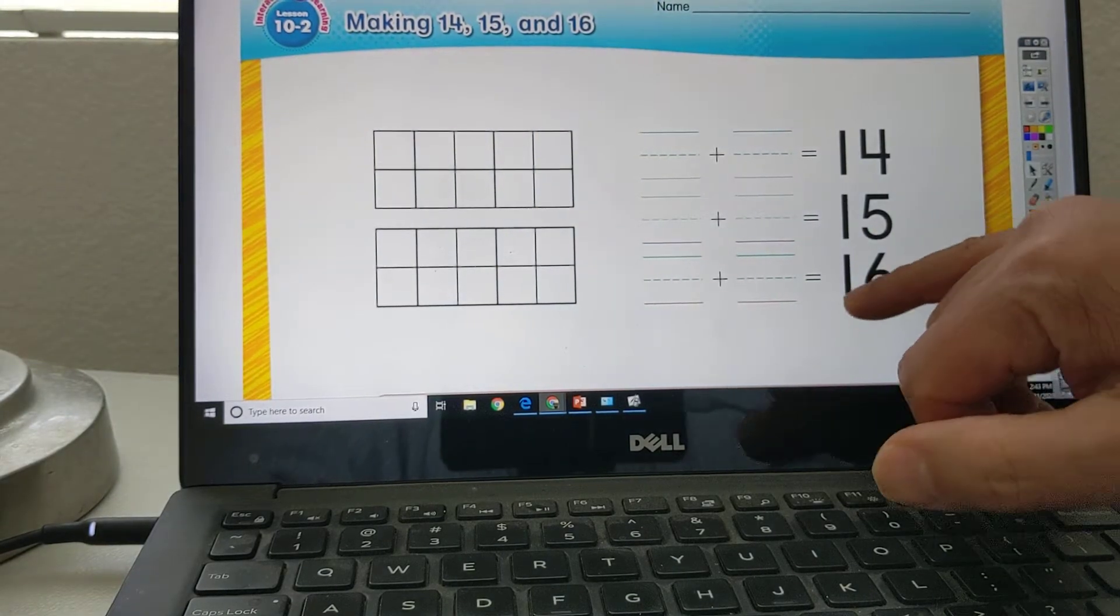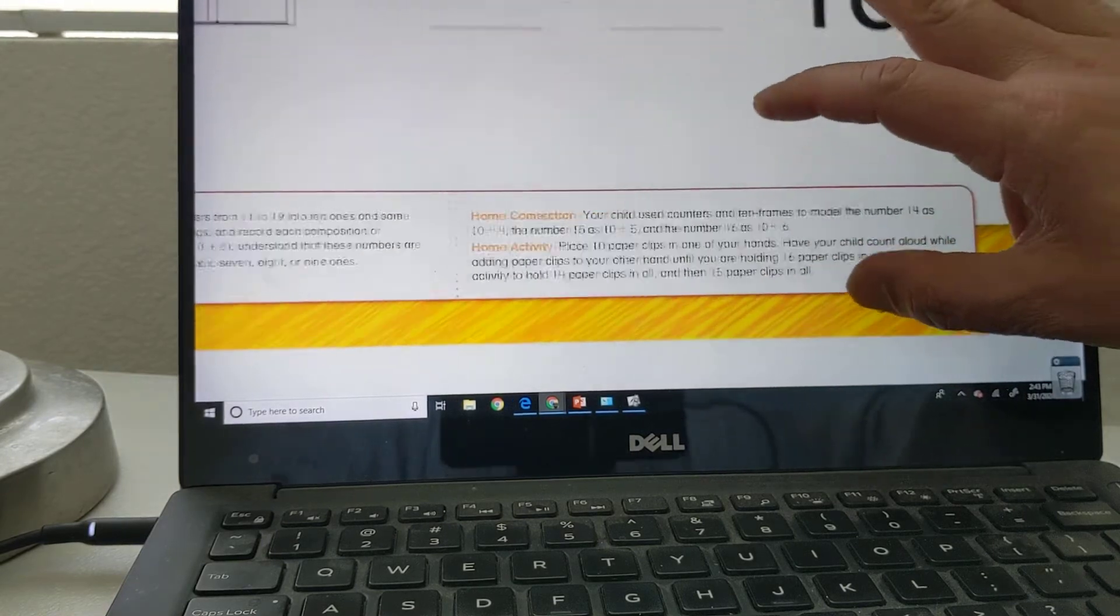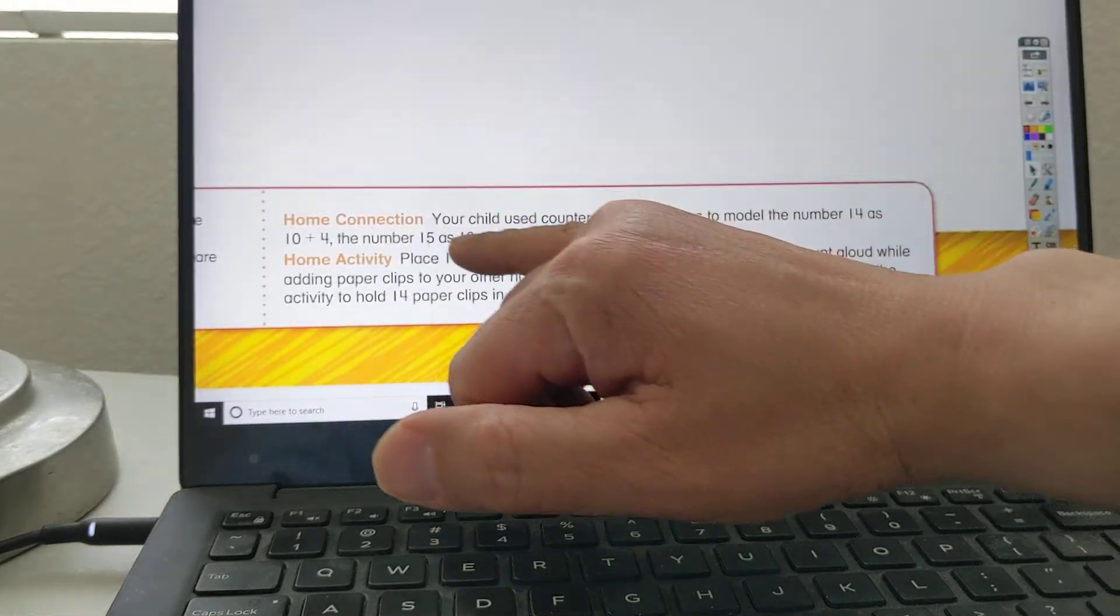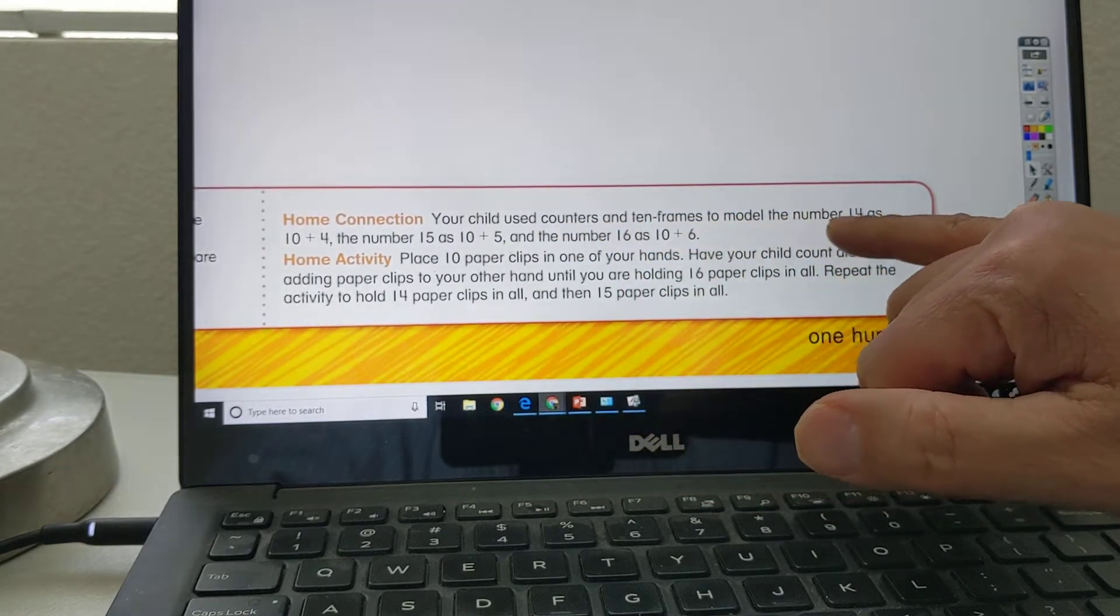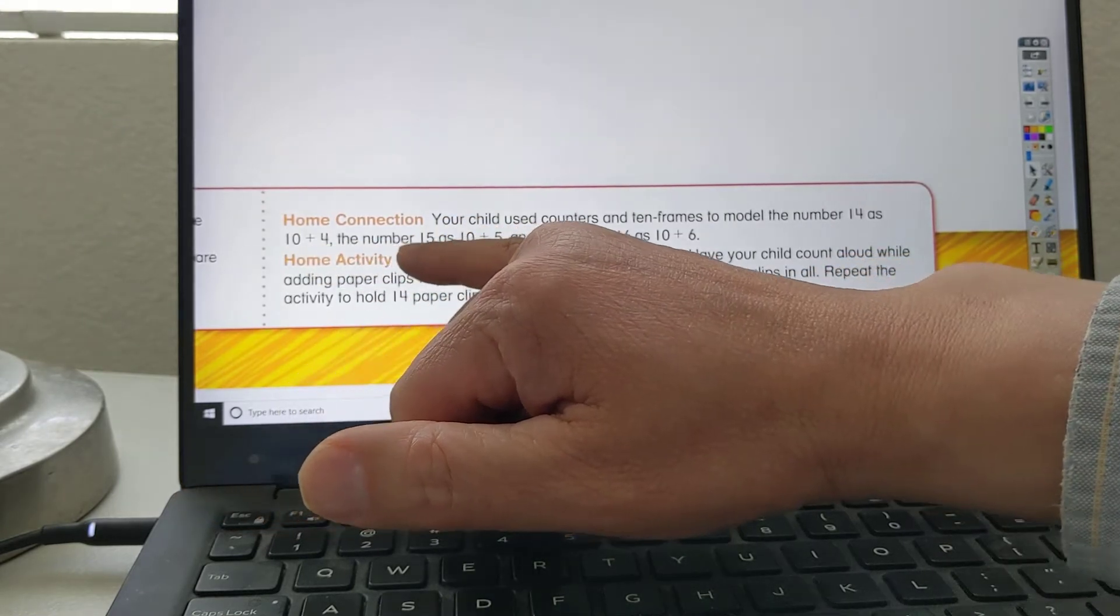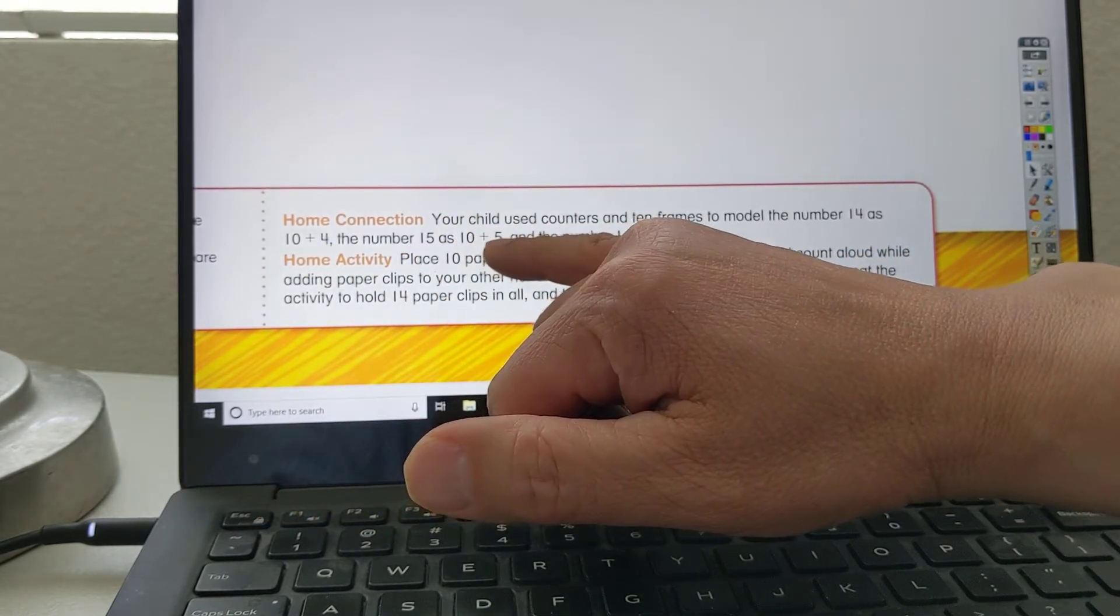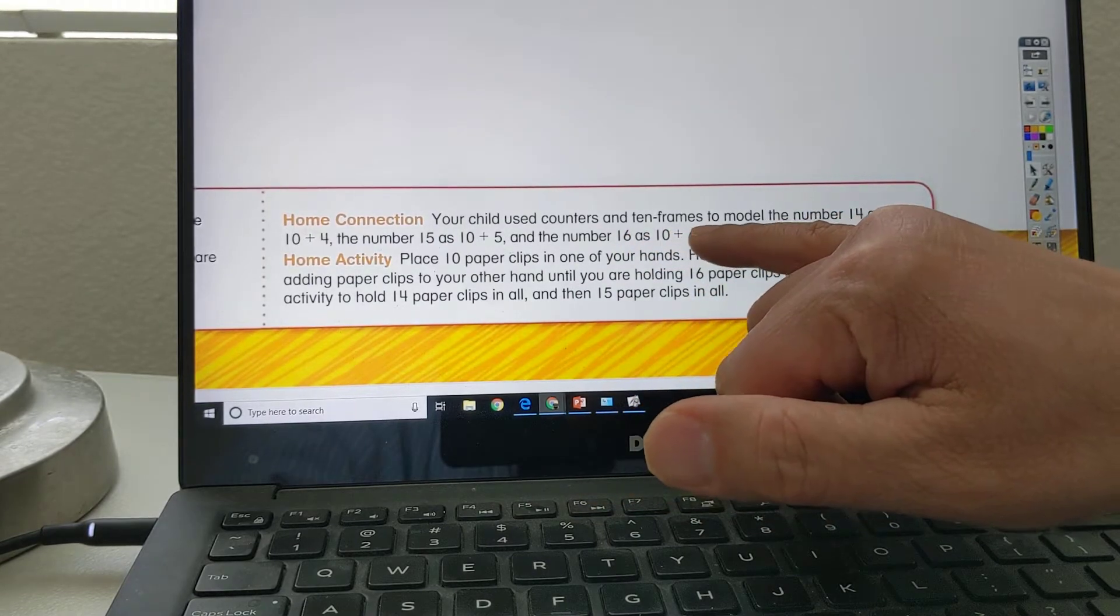Let's see what this is saying. All right. Home connection. Your child used counters and 10 frames to model the number 14 as 10 plus 4, the number 15 as 10 plus 5, and the number 16 as 10 plus 6.